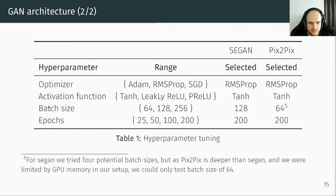For Pix2Pix, the best model used RMSprop as optimizer, tanh as activation function, a batch size limited to 64 due to GPU memory constraints, and 200 epochs.